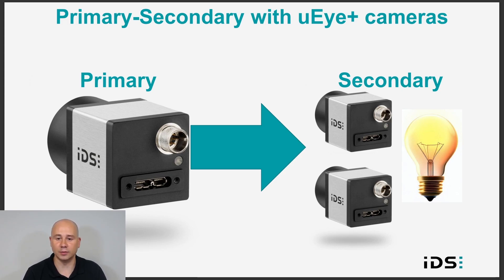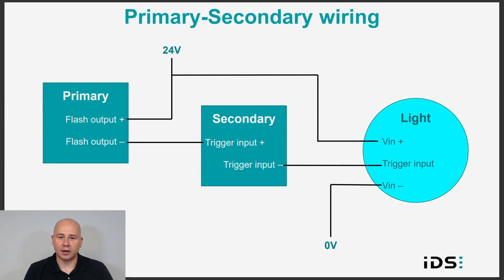In the following example, I am using a rolling shutter camera for the primary and a global shutter camera for the secondary. Therefore the light and the secondary camera can both use the primary camera's global flash window as their activation signal. The wiring for the primary-secondary setup is basically accomplished by combining the flash and trigger wiring from the previous examples earlier in this video. The flash output of the primary camera, the trigger input of the secondary camera, and the trigger input of the light are all connected together in series.